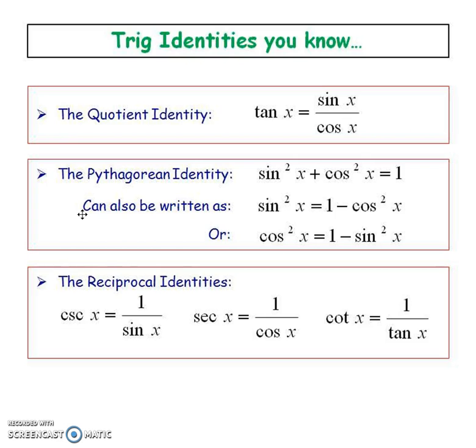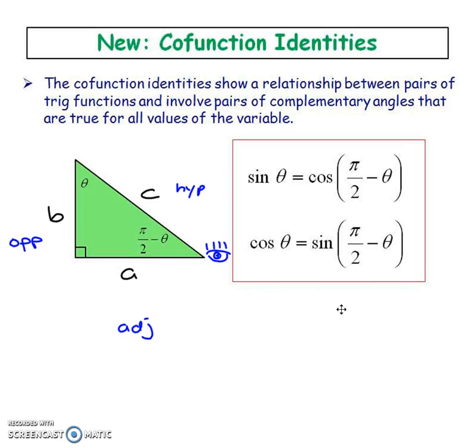There are a bunch of identities that we know from before. So we know about the quotient identity, we already know about the Pythagorean identity, and how to manipulate it. We also know any of the reciprocal identities. So anytime we see cosecants, secants, or cotangents within a proof, we can always change it to those other primary trig ratios.